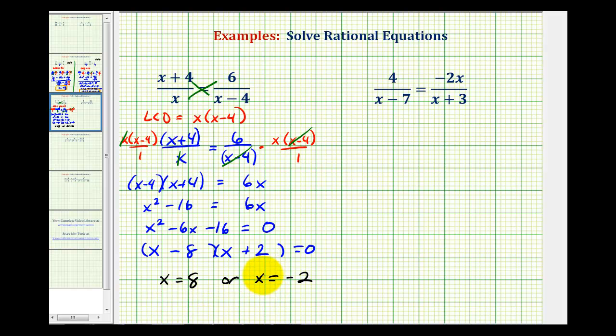Now before we say these are our solutions, we need to go back up to the original equation just for a moment. Remember, division by zero is undefined, so our denominators can never be zero, meaning x can never equal zero.